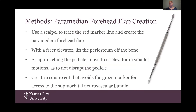Next in our methods, we used a scalpel to trace the marked line and create the paramedian forehead flap, cutting through the skin, forehead musculature, and periosteum. Then, with a freer elevator—a tool specific to forehead flaps—we lifted the periosteum off the bone. As approaching the pedicle, we moved the freer elevator in smaller motions so as not to disrupt the pedicle. Once we found the pedicle, we marked the supratrochlear pedicle with a black marker so we could measure from it later. We also created a square cut that avoids the green marker for access to the supraorbital neurovascular bundle without disruption.